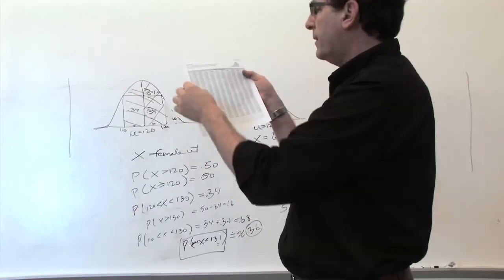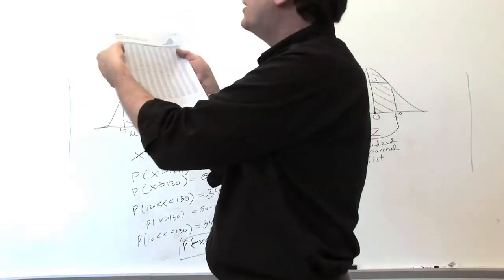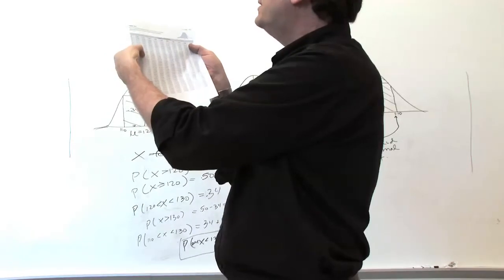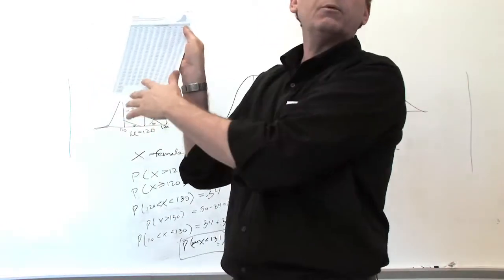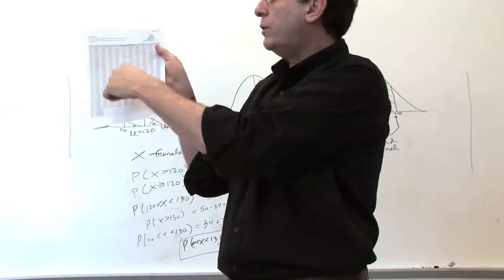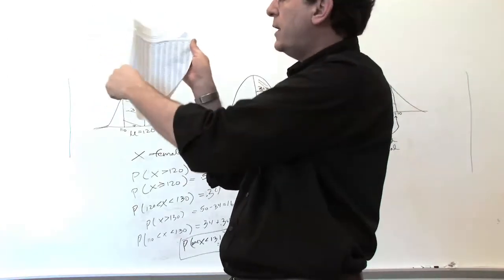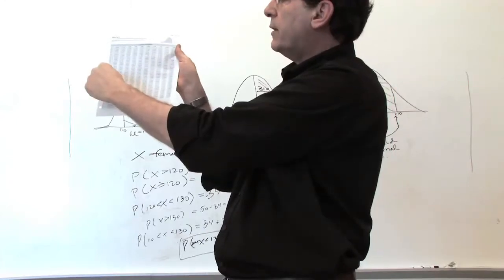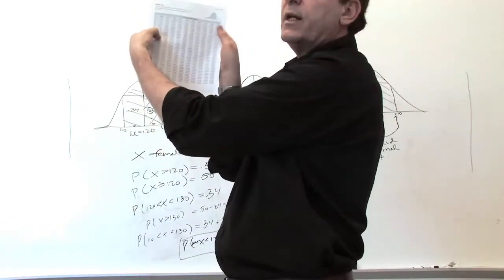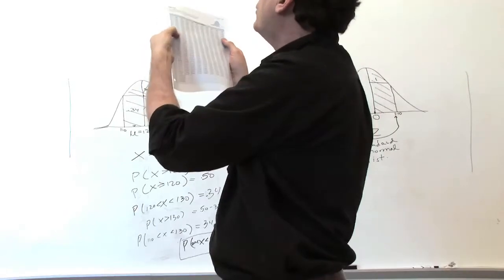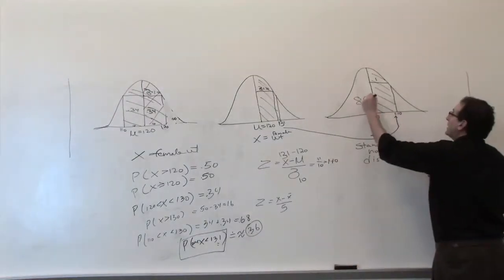In this case we want the area below 1.10. The area below 0 is 50%. Now going up to 1.1 — all these different columns represent the second decimal place of accuracy: 1.10, 1.11, 1.12 ... 1.19, and so on. The numbers go like an S or a snake, getting bigger and bigger. Looking at 1.10, the value is 0.8643.